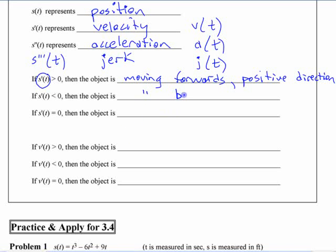If it's less than zero, of course, it's moving backwards or in the negative direction, however you define that. If the first derivative is zero, then what's happening? It's not moving, right? Stationary? I don't know.